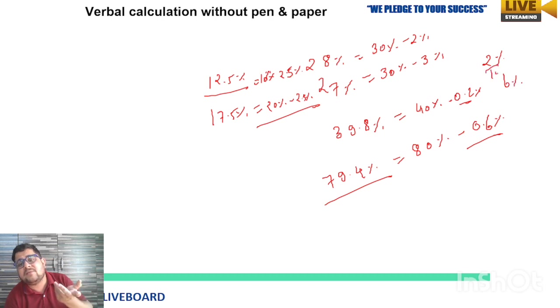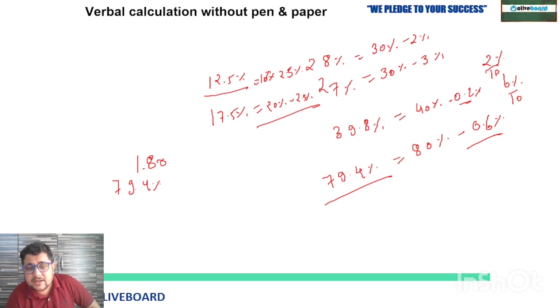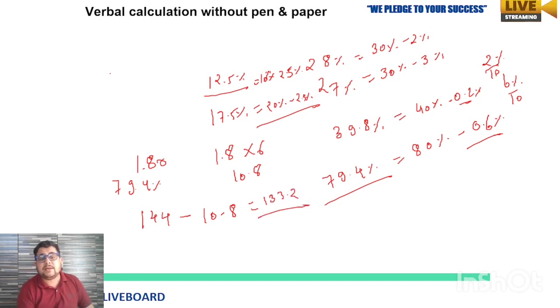How will you calculate 0.2%, 0.6%? You can easily calculate 2%, 6%—just divide that by 10 to get the decimal values. Suppose you have to calculate 79.4% of 180. 80% first: 10% is 18, 18 times 8 is 144, minus 0.6%. So 6% of 180—1.8 is 10%, multiply by 6, that's 10.8. 144 minus 10 is 134, minus 0.8 is 133.2.